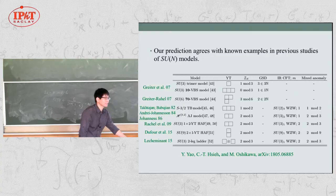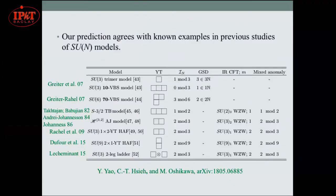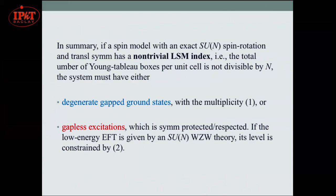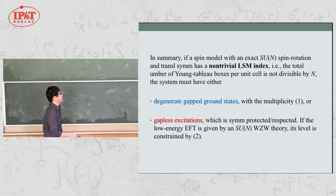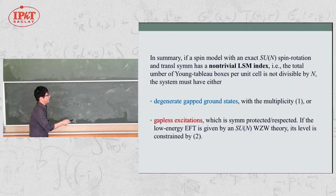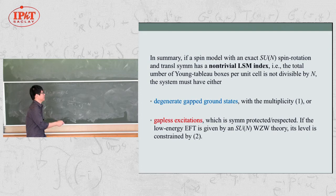For two-leg ladder systems, the Young-tableau representation is a tensor product of two fundamental representations. Our index is 2 mod 3, and this agrees with the low-energy SU(3) level-1 WZW theory. In summary: if an SU(N) spin model with spin rotation and translation symmetry has a non-trivial LSM index — that is, the total Young-tableau boxes per unit cell is not divisible by N — the system must either have degenerate ground states satisfying our formula, or gapless excitations. If the low-energy critical theory is given by an SU(N)_K WZW theory, the anomaly must match the index.